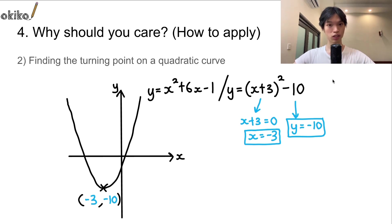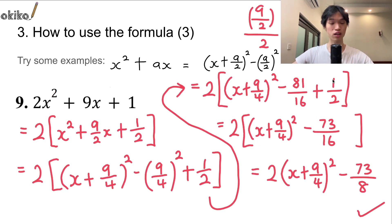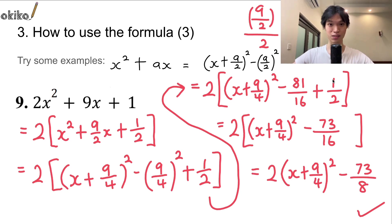So that is pretty much everything you need to know about completing the square. In the description, I've left a link to a paper you can try out, along with answers to completing the square questions. If you find content like this useful, please share it around — it helps me a lot. Subscribe if you want to see more tutorials like this. I've been Isaac from OKCore.org. Thank you very much for watching, and I'll see you next time.